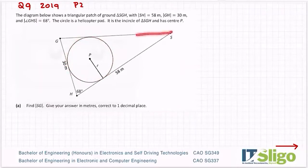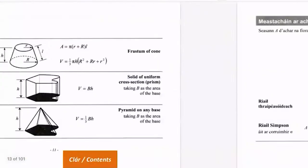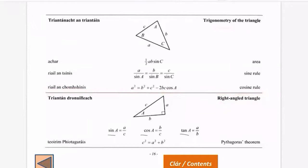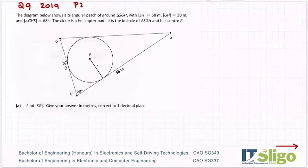Find SG, giving your answer in metres correct to one decimal place. My starting point for any triangle question is: is it a right-angled triangle or not? On page 16 of the log tables, the bottom section is right-angled trig and the top is non-right-angled trig. You can use non-right-angled rules on right-angled triangles, but not vice versa.